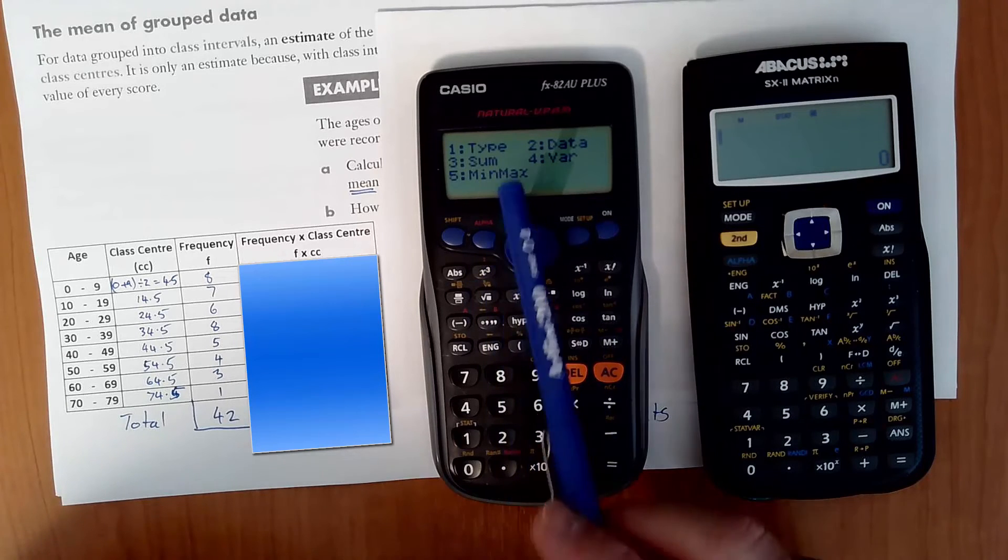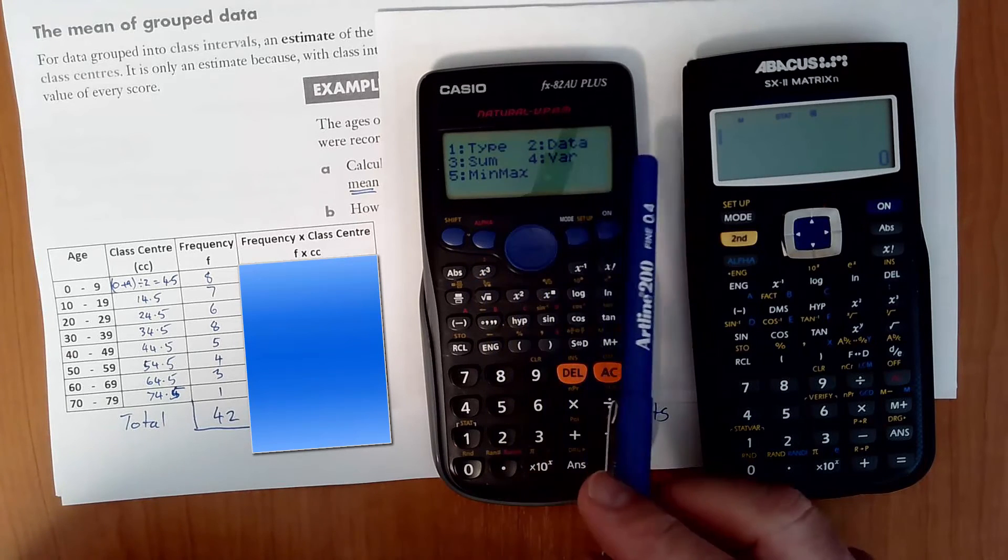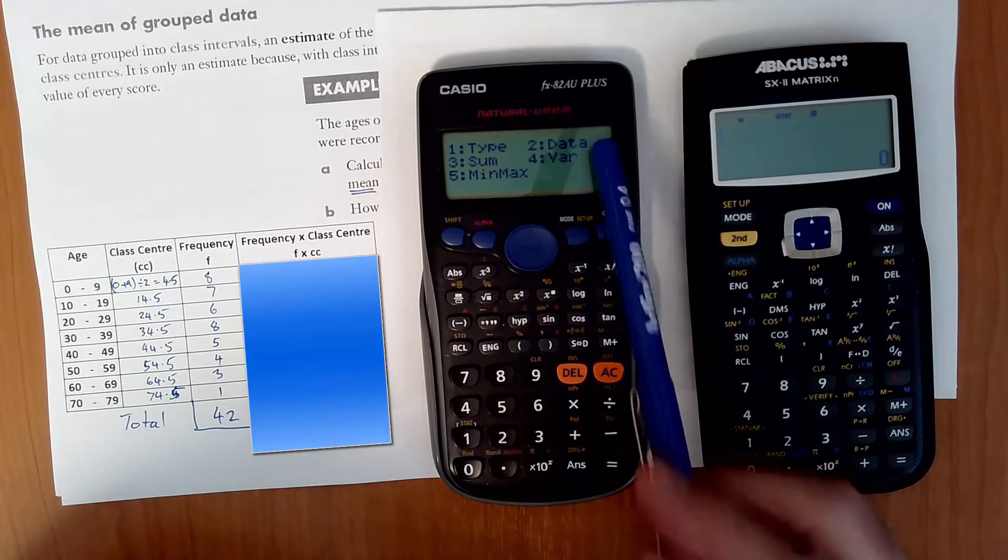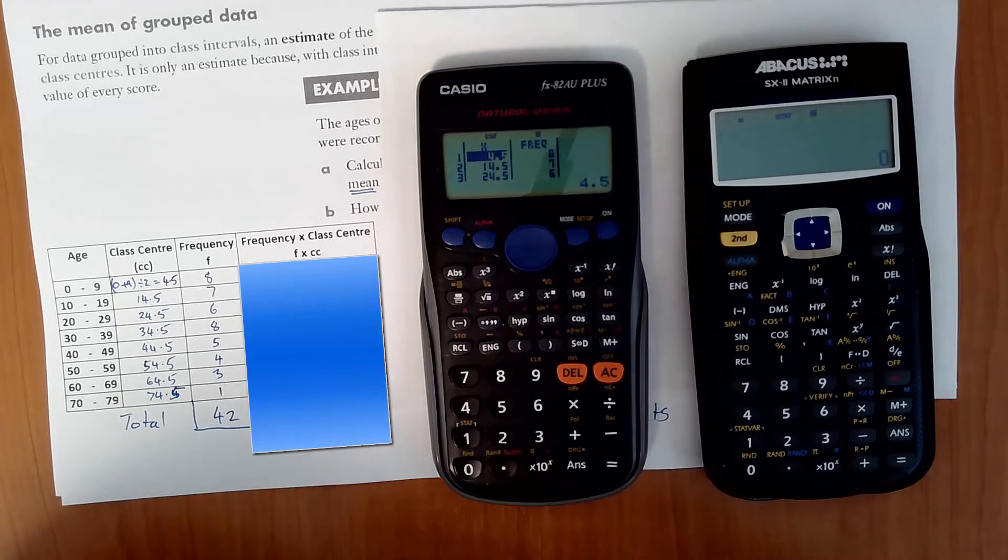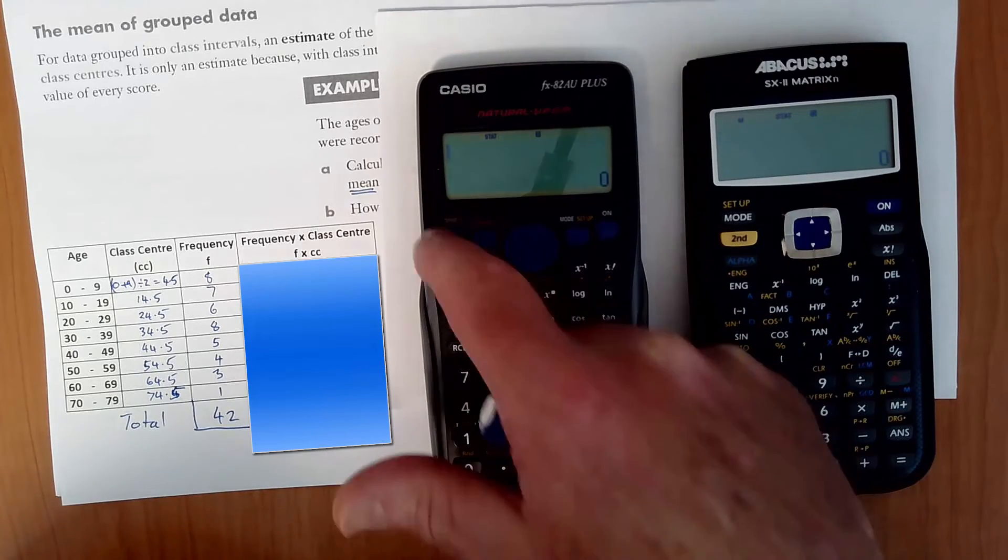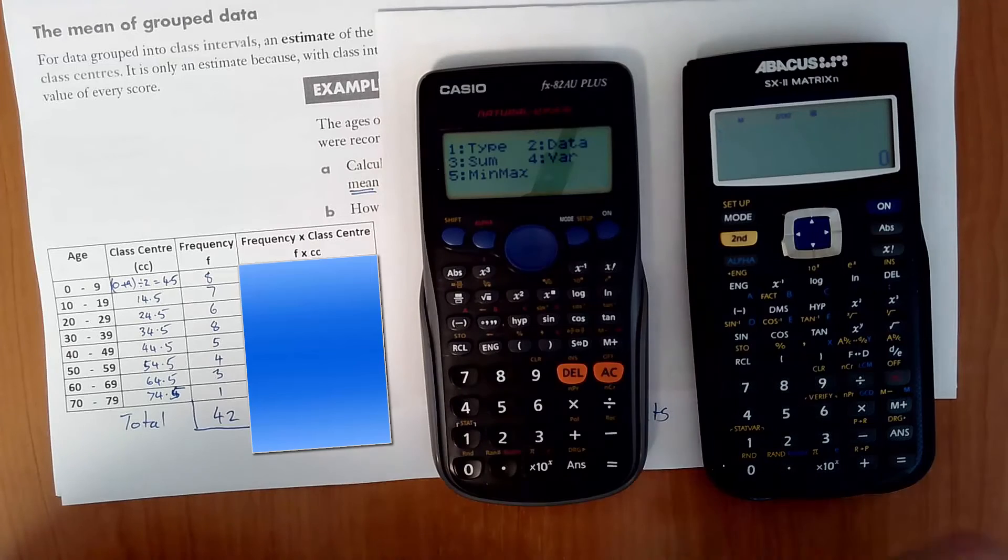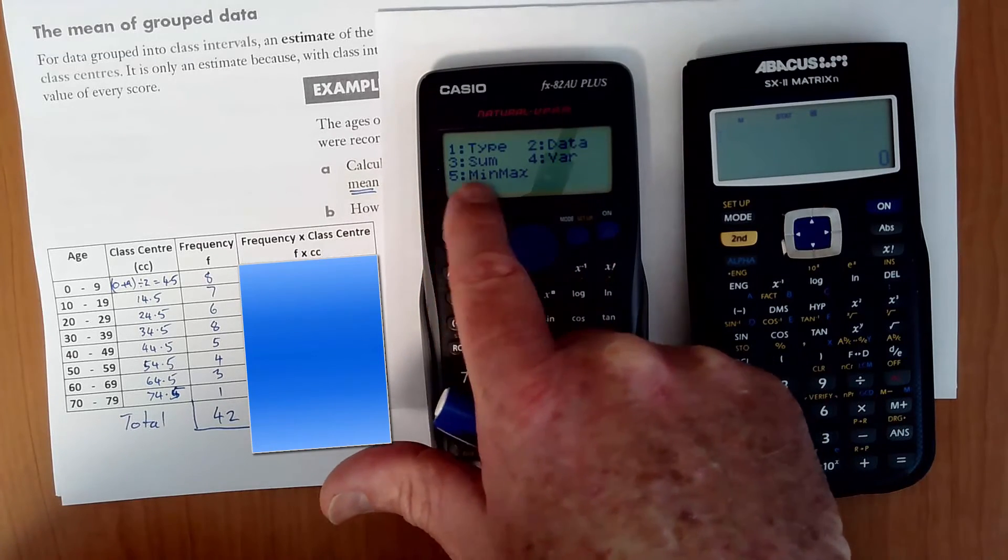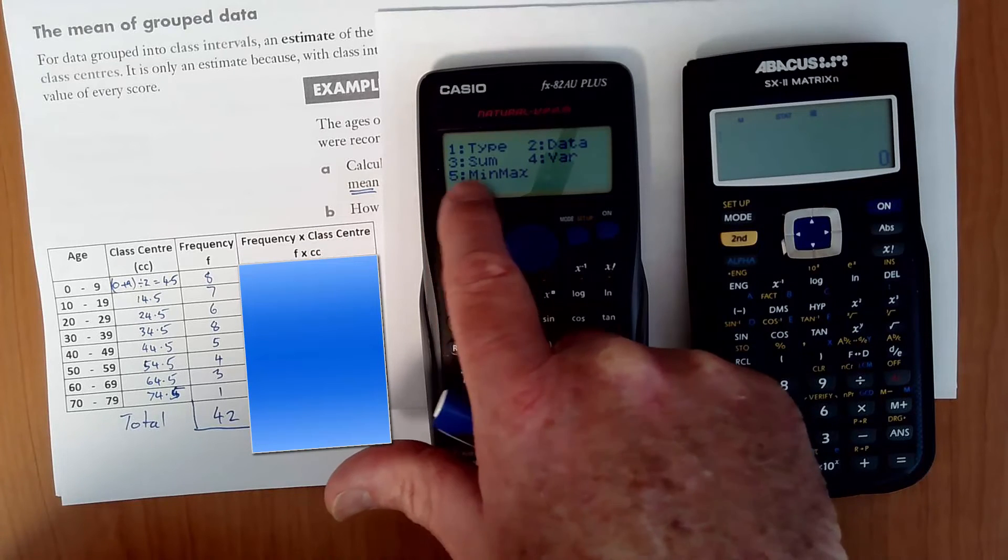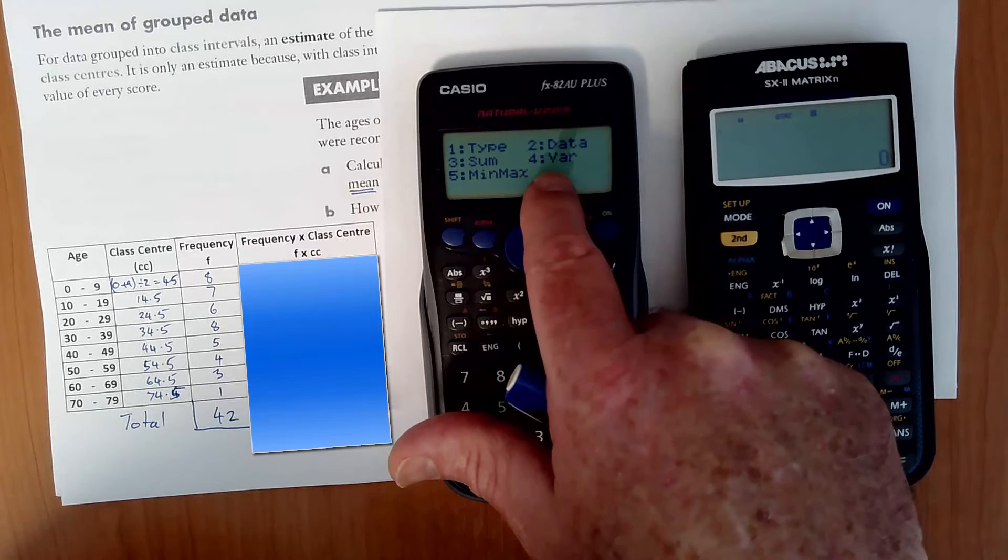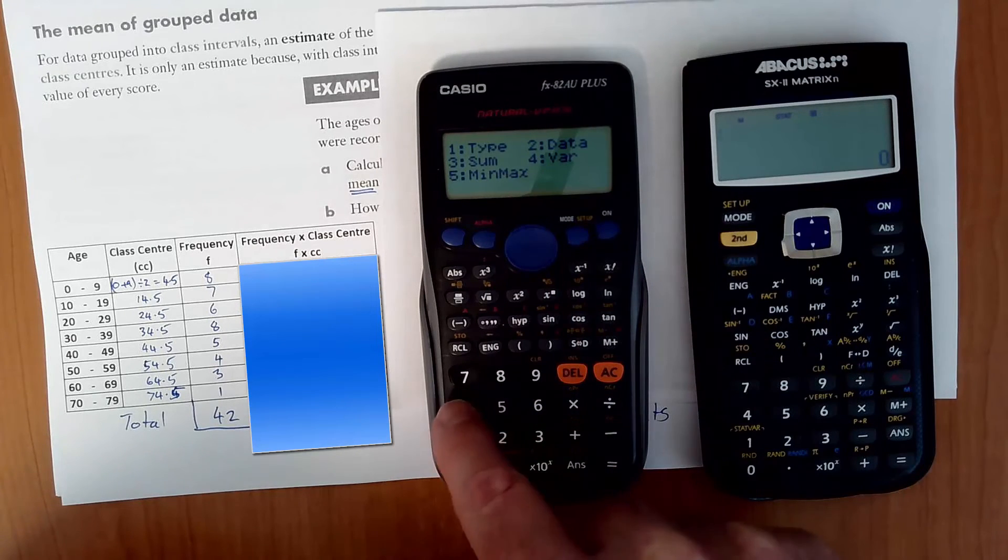Now, there's lots of different options here. You can go type, which we're not going to worry about at this stage. Data. If I go 2 for data, I get back to my data and I can check it and change it. Press AC, SHIFT, STAT. If I want things to do with the sum, if I want to add up all the numbers, then I can use 3. But, for most of the time, you're going to use number 4 for the variances.